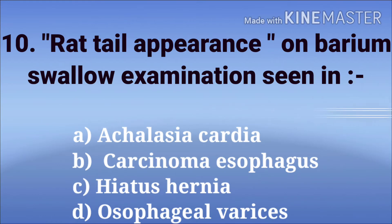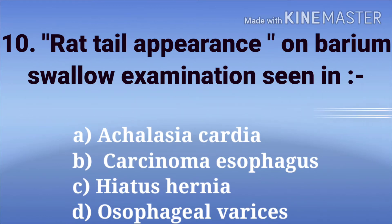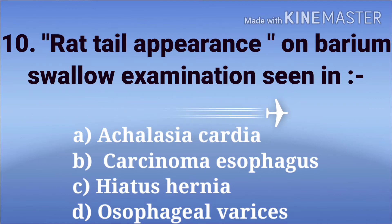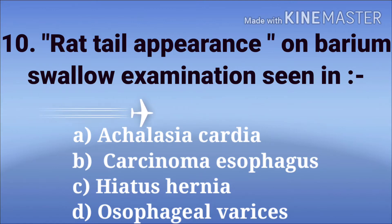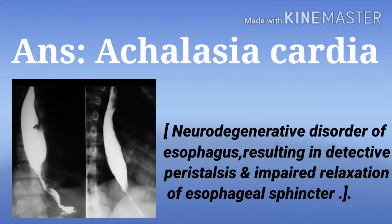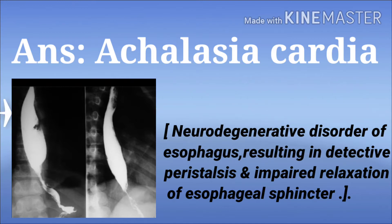Rat tail appearance on barium swallow examination seen in. The options are achalasia cardia, carcinoma esophagus, hiatus hernia, and esophageal varices. The answer is achalasia cardia. It is a neurodegenerative disorder of the esophagus, resulting in defective peristalsis and impaired relaxation of esophageal sphincters.